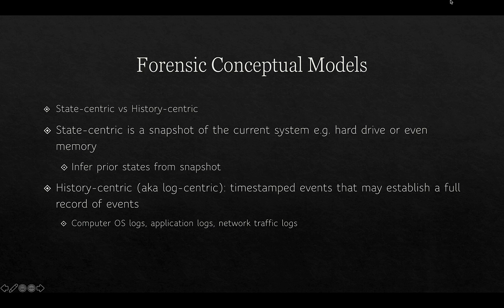There are two approaches to forensic examination: state-centric and history-centric. State-centric is a snapshot of the current system — for example, a hard drive or memory — from which you can infer prior states. You can see a process running and determine approximately when it was started. History-centric looks at logs — computer operating system logs, application logs, network traffic — to establish a full chronological record of events that helps rebuild what was happening at the time the equipment was in use.